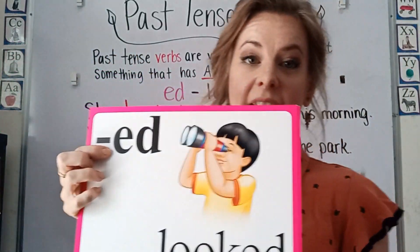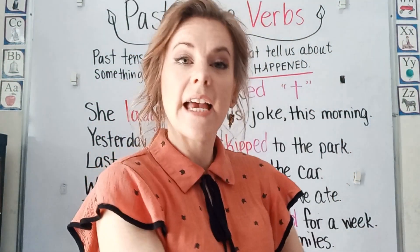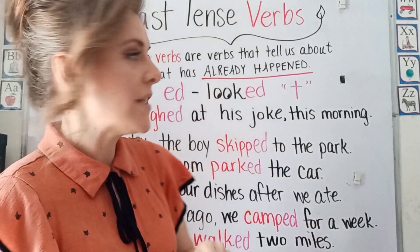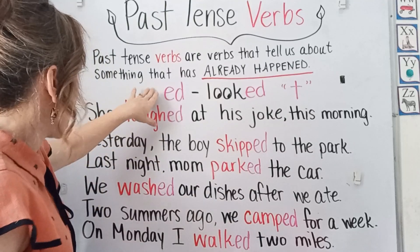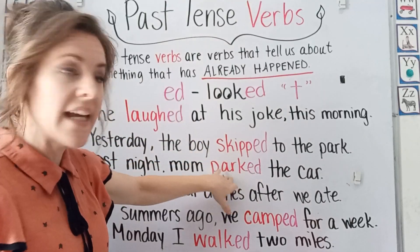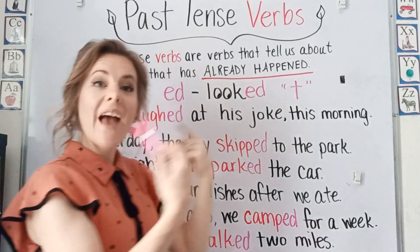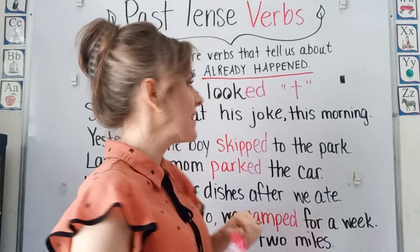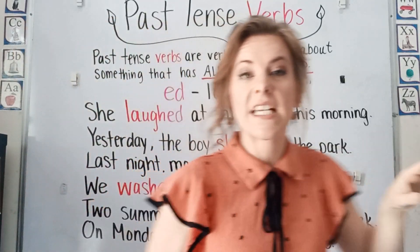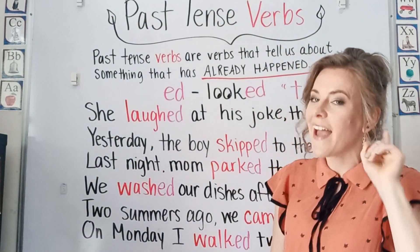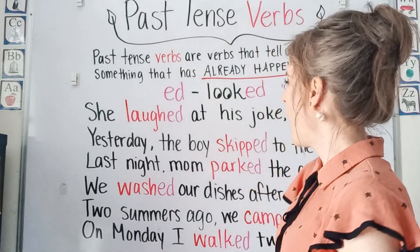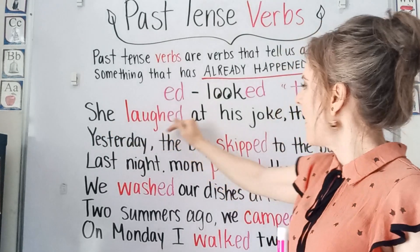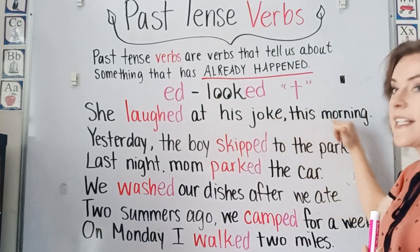This E-D is a suffix and it says T in 'looked.' So let's look over here at some past tense verbs. We've taken the verbs and added a suffix to make them something that's happened in the past. This suffix is E-D, but it sounds like T. Let's look at our first example: 'She laughed at his joke this morning.'